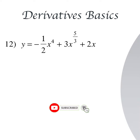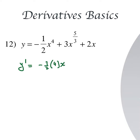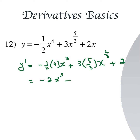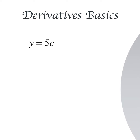Here y equals minus 1/2 x^4 plus 3x to the power 5/3 plus 2x. We do similarly: y prime equals (minus 1/2 times 4) x to the power 3, plus 3 times (5/3) x to the power 2/3, plus 2. The 3 and 3 cancel in the second term, giving 5x to the power 2/3. So y prime = minus 2x^3 + 5x to the power 2/3 + 2.